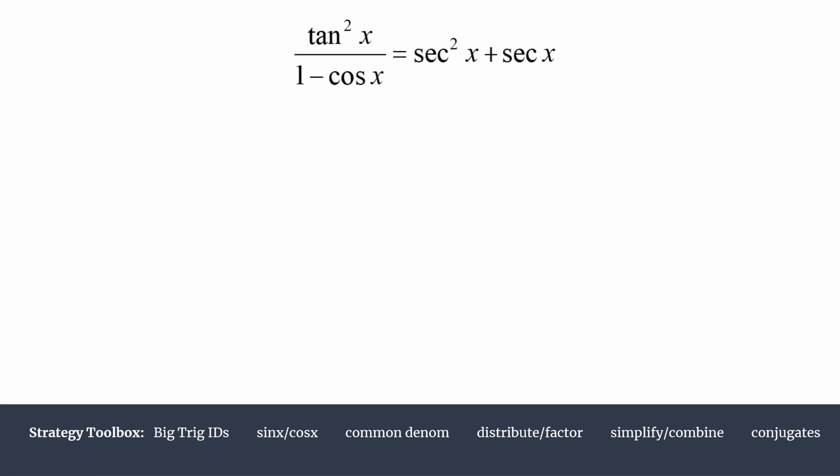We know the first thing we want to do when verifying a trig identity is choose which side we want to work on. We usually choose the more complex side. In this case I think they're both pretty complex. The left hand side we could potentially use a conjugate, seeing that 1 minus cosine x in the denominator, and the right hand side has two terms.